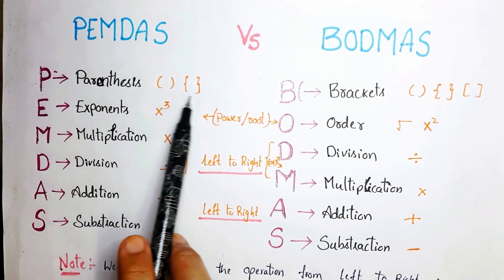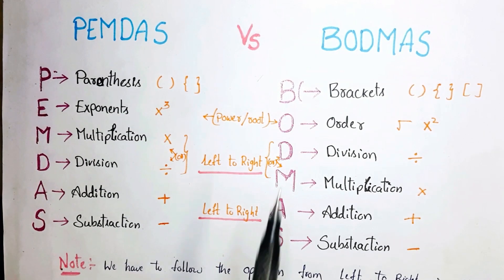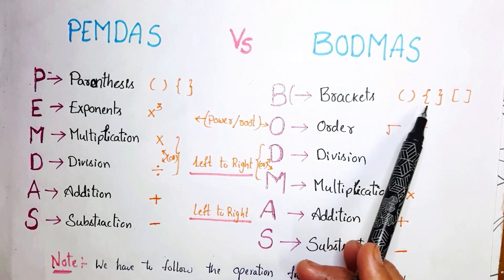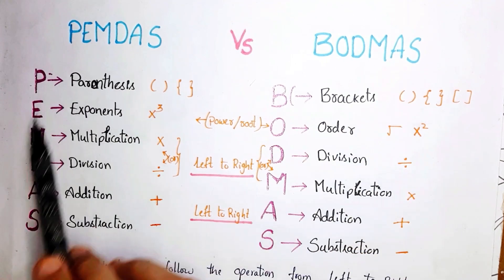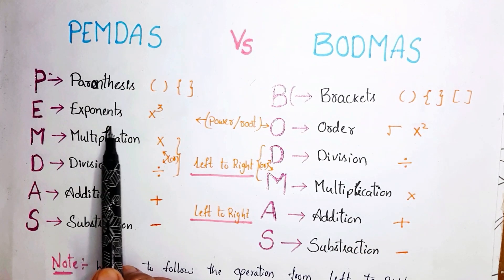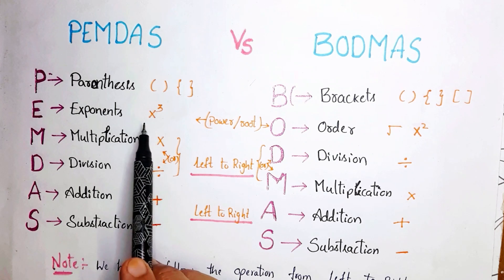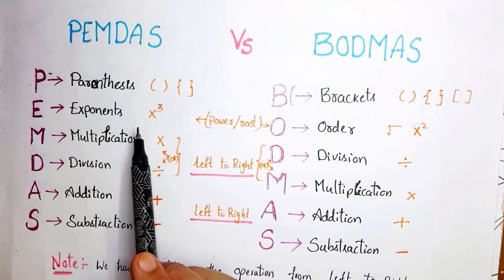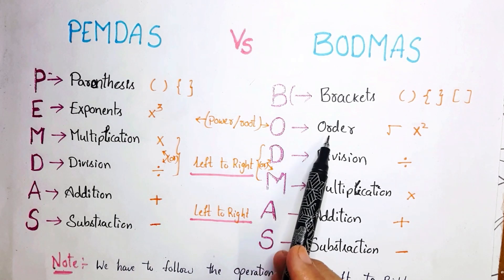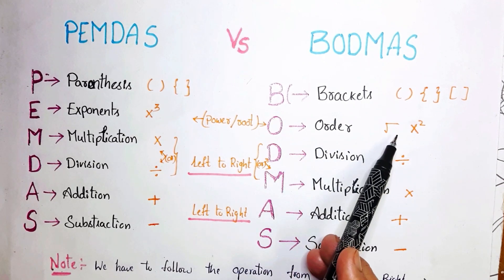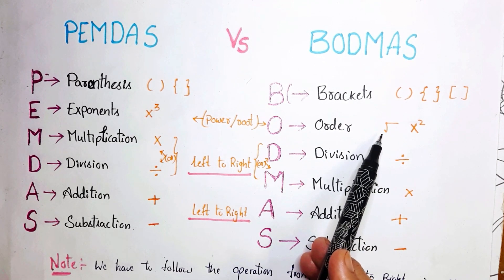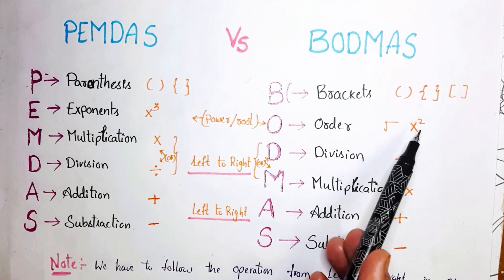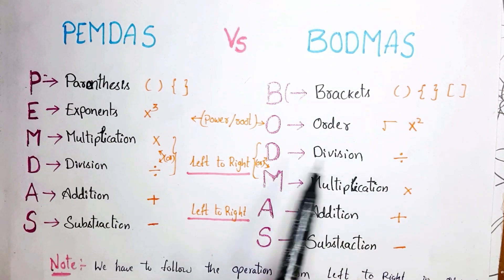Here P stands for Parenthesis — parenthesis is nothing but brackets. Same in BODMAS, B stands for Brackets — simple brackets, curly brackets, or square brackets. Next, E stands for Exponents — exponents means something to the power, like x squared, x cubed, or x to the power of 5. And O stands for Order — order is also power as well as roots, like square root, cube root, or something to the power of 2 or 3.